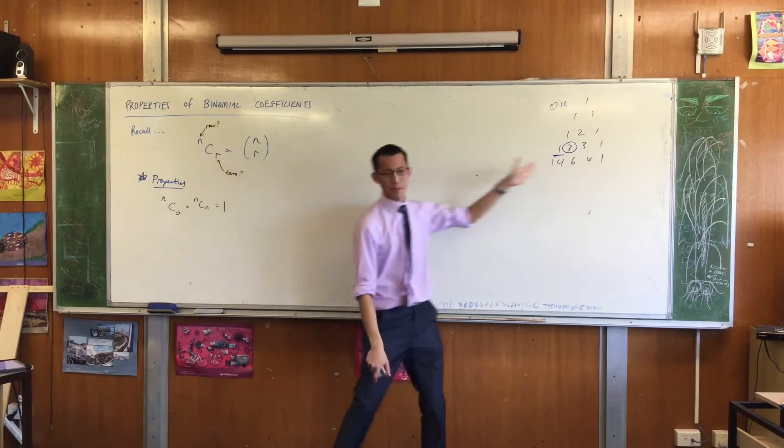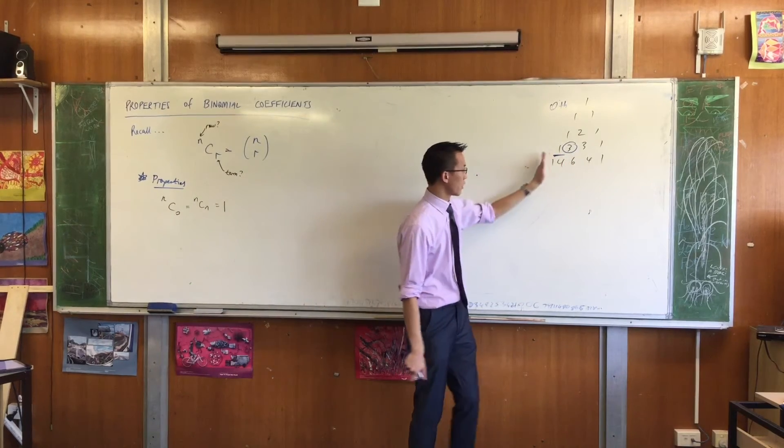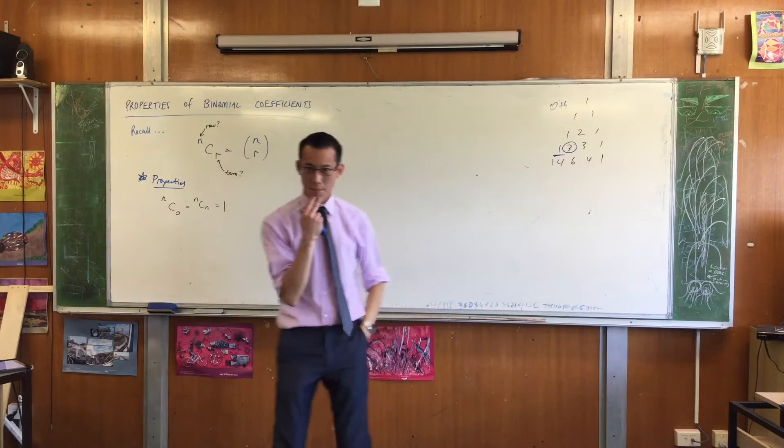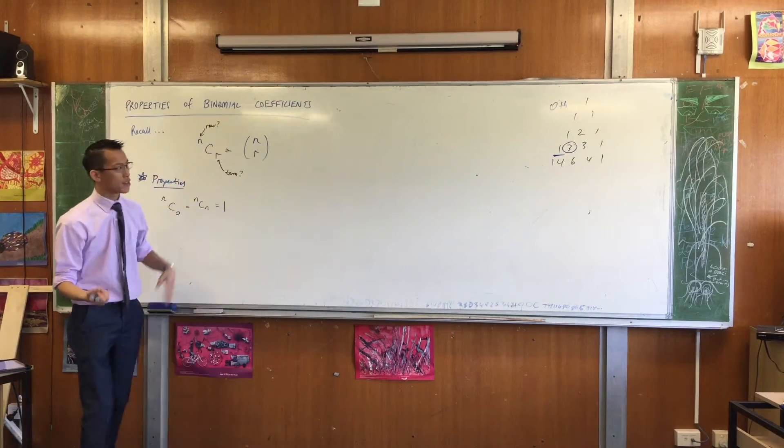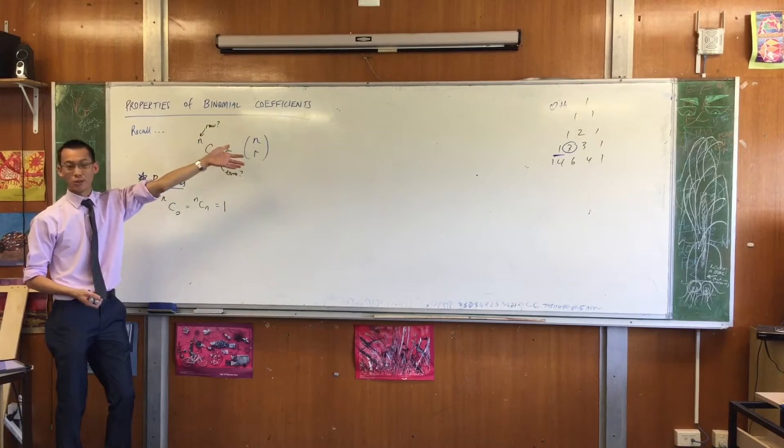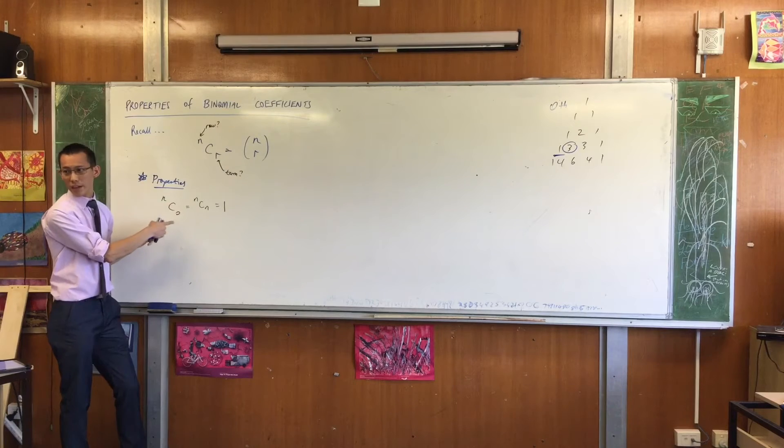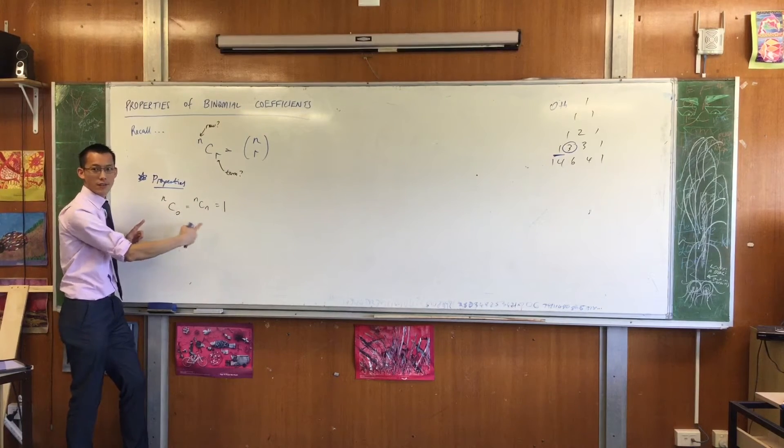The second thing is each row is symmetrical. You notice that? Like the 1, 3, 3, 1, 1, 4, 6, 4, 1. So pause for a minute and think. How would you describe the symmetry of Pascal's triangle, the symmetry of these coefficients, how would you do it in this kind of notation?